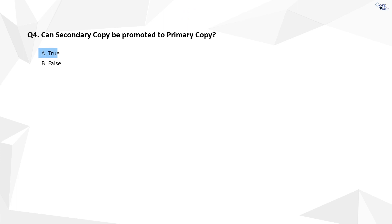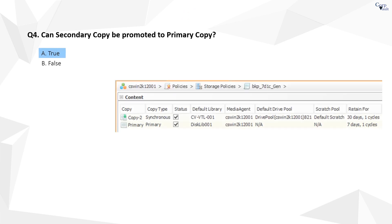The correct answer is A. If the primary copy becomes inoperative due to a storage media failure, or a library or network malfunction, you can promote a secondary copy to become the primary copy. Promoting a secondary copy allows you to continue operations as before, and make repairs without interrupting backup and restore operations.